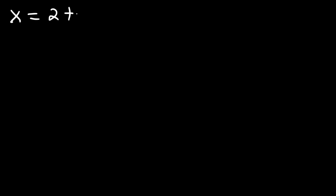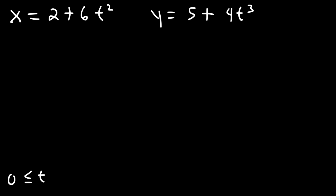So let's say that x is equal to 2 plus 6t squared, and y is equal to 5 plus 4t cubed. And let's say t is restricted between 0 and the square root of 8. Go ahead and find the arc length from 0 to the square root of 8.